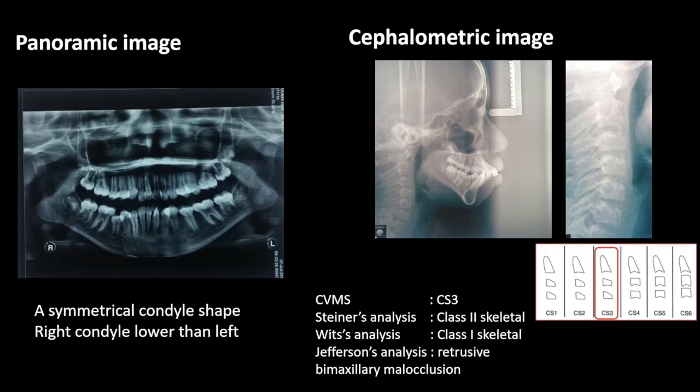The right condyle was lower than the left condyle. Cephalometric analysis showed a cervical vertebrae maturation stage with results of CS3 maturation stage. Steiner's analysis showed class 1 skeletal, and Harvold's analysis showed that the patient had a retrusive big maxillary occlusion.